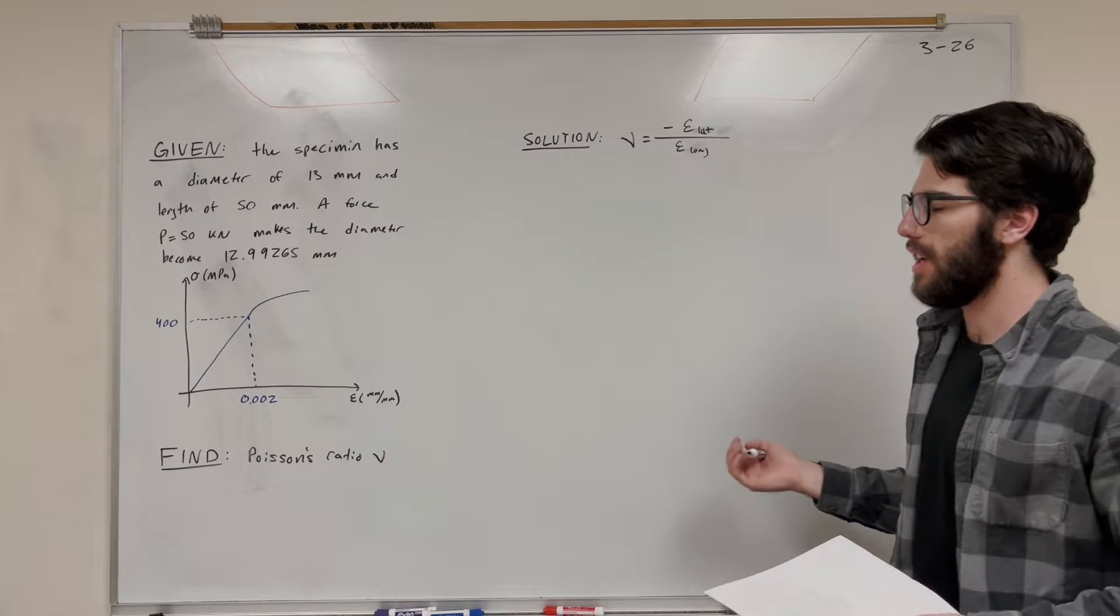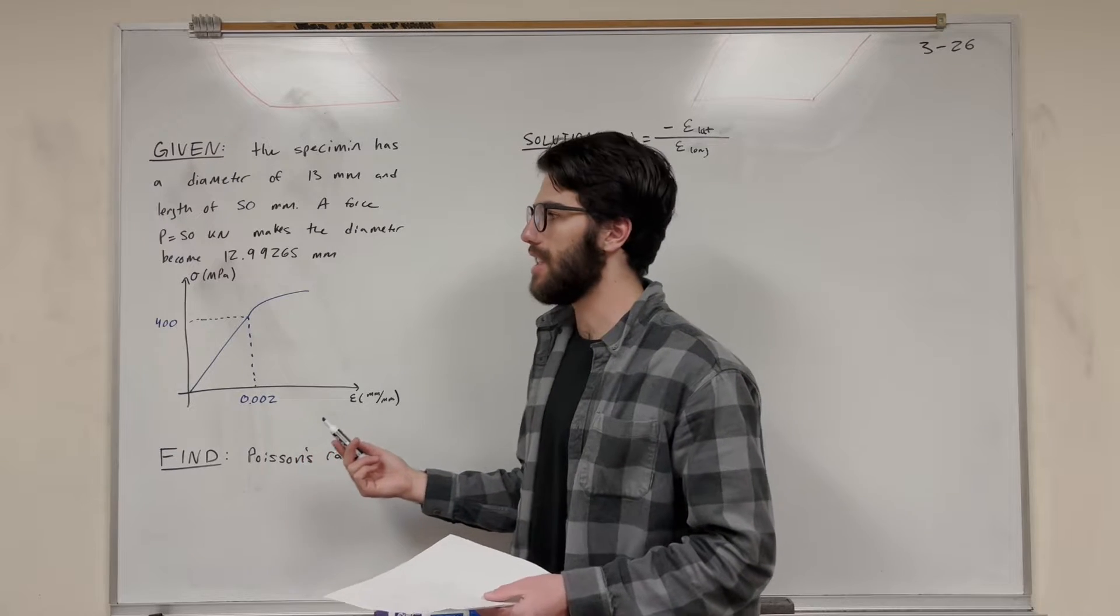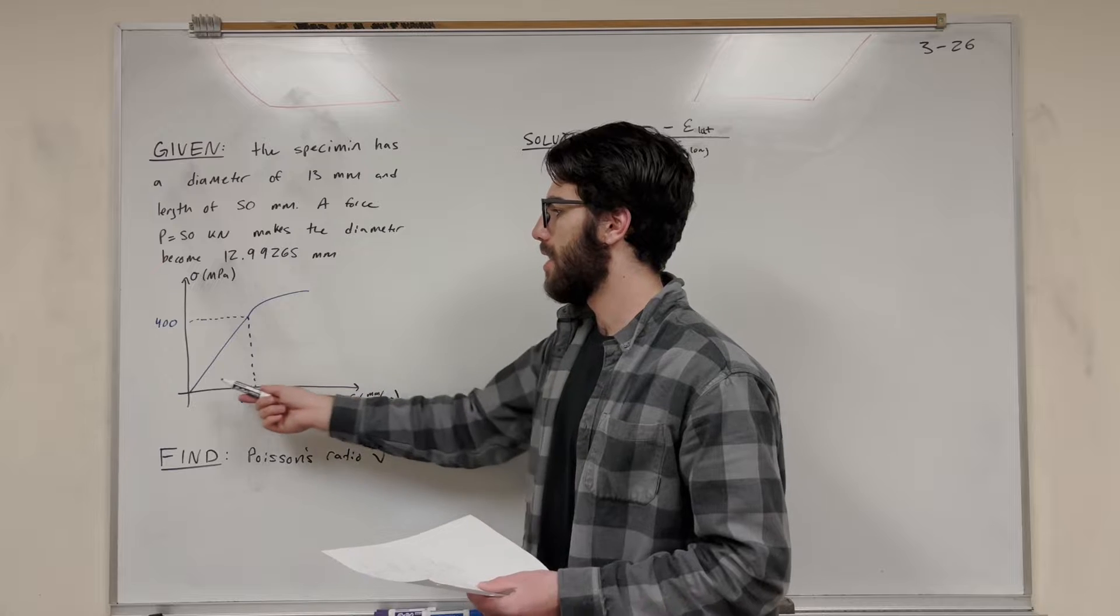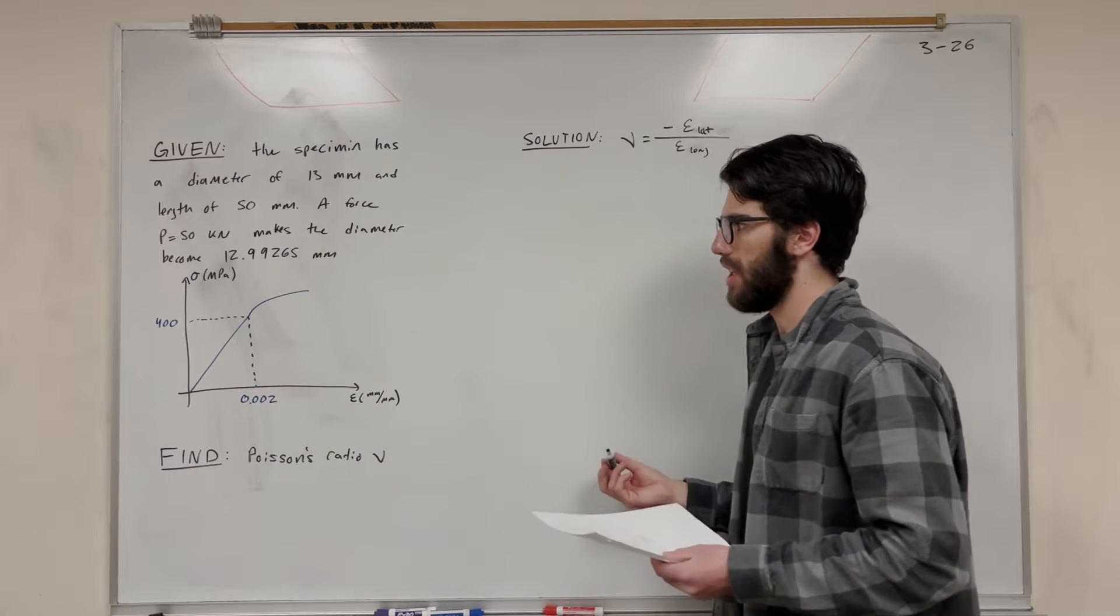So one thing we're going to need for that is E, the modulus of elasticity. And we can get the modulus of elasticity by looking at the elastic region of the stress strain diagram. So the elastic region is basically the straight linear line here. And we want to find the slope of that because that's going to be equal to E.